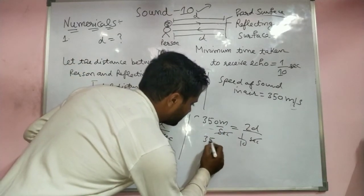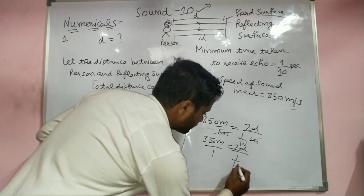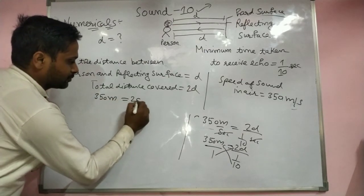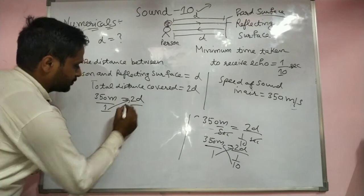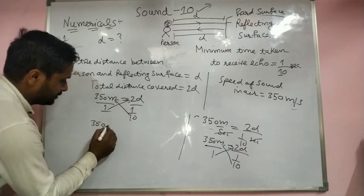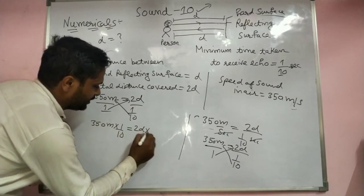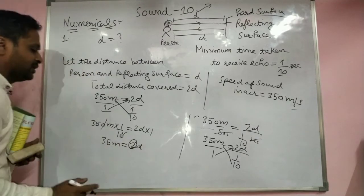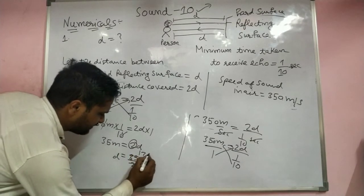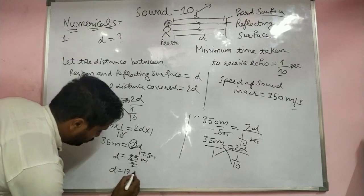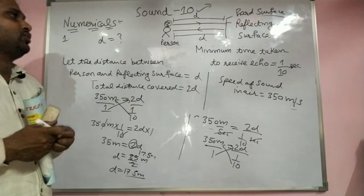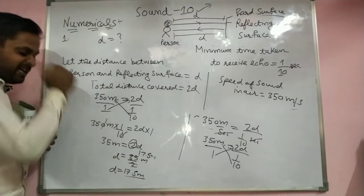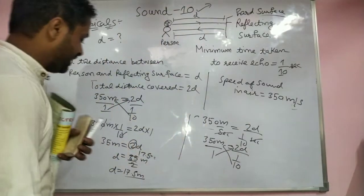Do the cross multiplication: 350 × (1/10) = 2D. That gives 35 = 2D, so D = 17.5 meters. The unit works out to meters as expected. The total distance is 35 meters, and the minimum distance from the person to the reflecting surface is 17.5 meters. That is the answer.